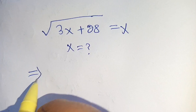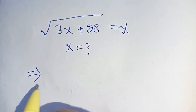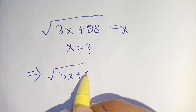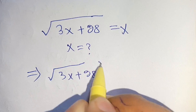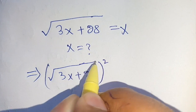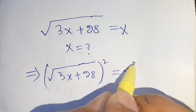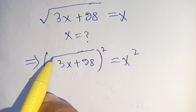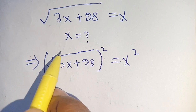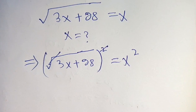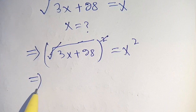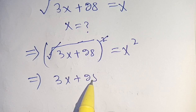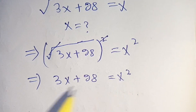We can write this as: square root of (3x plus 28), raised to the power 2, is equal to x squared. Now we can cancel out the square root with the square, and we get 3 of x plus 28 is equal to x squared.